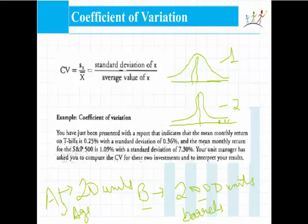To compare the two distributions, we will have to compute something called the coefficient of variation — that is, divide the standard deviation by the mean, so that you get a sense of what the standard deviation is with respect to the scale of the problem. The coefficient of variation can be compared amongst different distributions. If one distribution has a higher coefficient of variation, we can say it is more dispersed; if it has a lower coefficient of variation, we can say it is less dispersed.